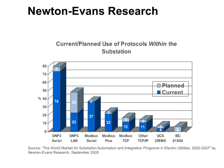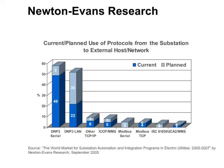One of the Newton-Evans' surveys looked at the current and planned uses of protocols within the substation. As shown in the graph, DNP-3 is the leading protocol currently used within the substation. DNP-3, especially land-based implementations, is also the leading protocol for planned usage within the substation. Another survey looked at the current and planned use of protocols from the substation to the external host network. Once again, DNP-3 is the leading protocol for this application.